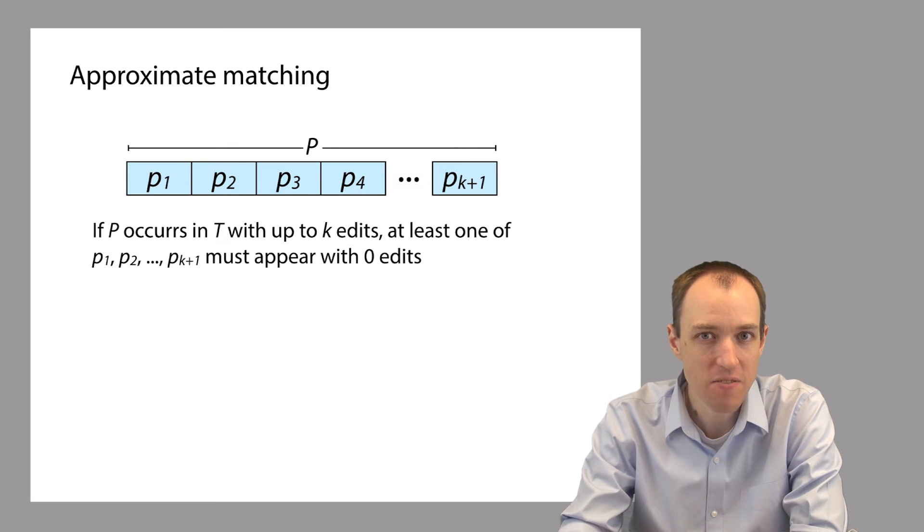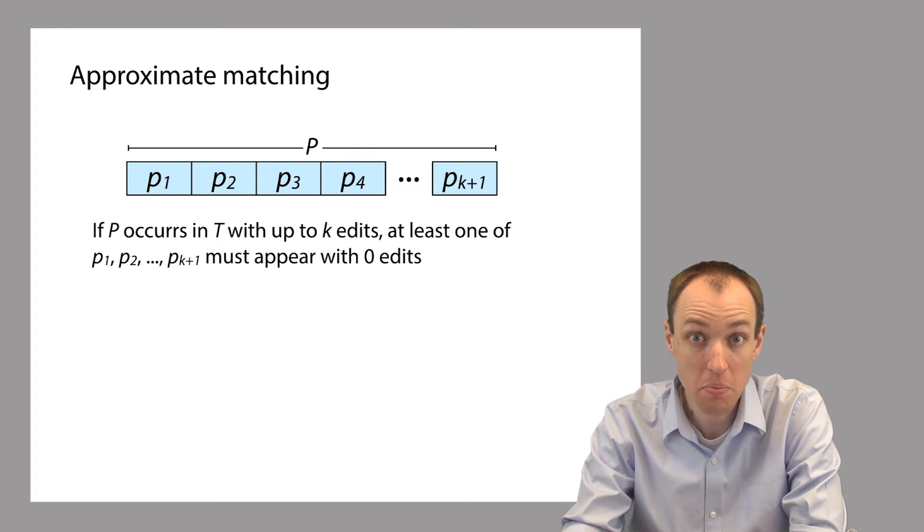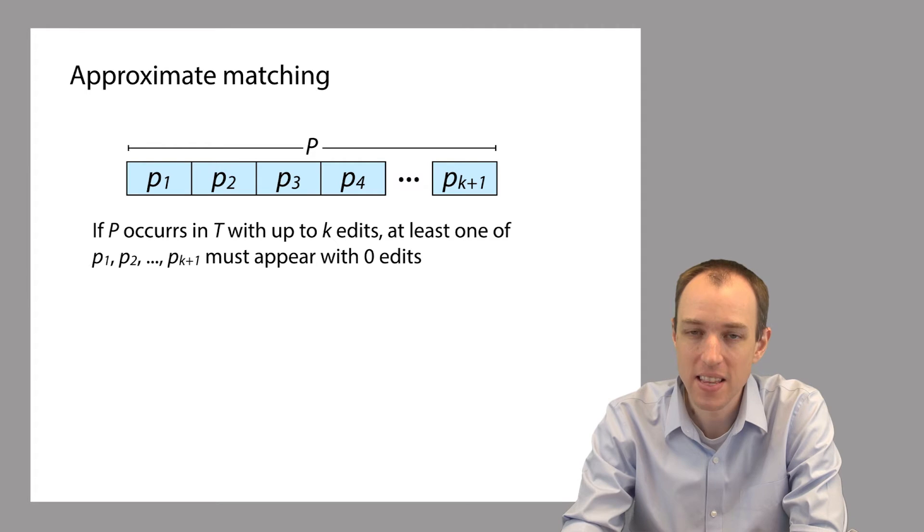So the new principle is if P occurs in T with up to k edits, then at least one of these k plus one partitions of P must appear with zero edits, with no edits. In other words, it'll occur exactly within the string T.